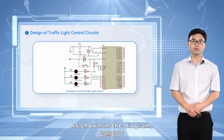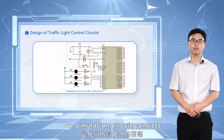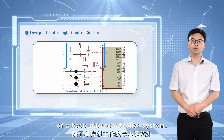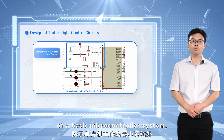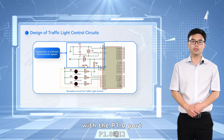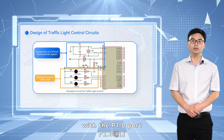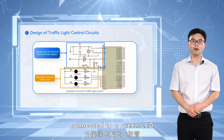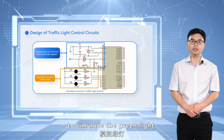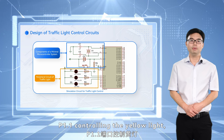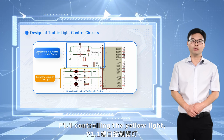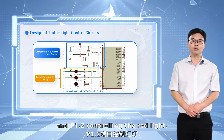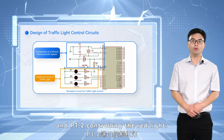As shown in the diagram, our simulation circuit consists of a basic microcontroller system, with the P1.0 port connected to a green LED to simulate the green light, P1.1 controlling the yellow light, and P1.2 controlling the red light.